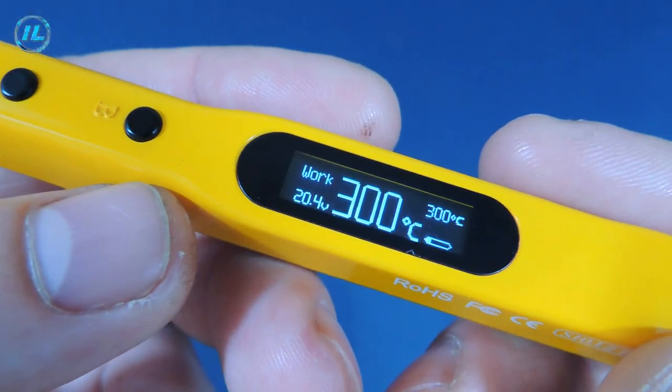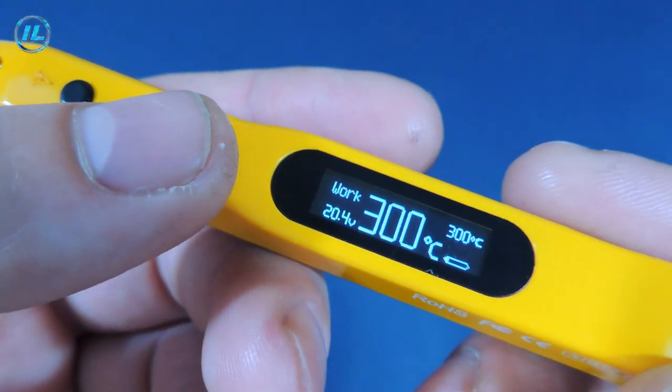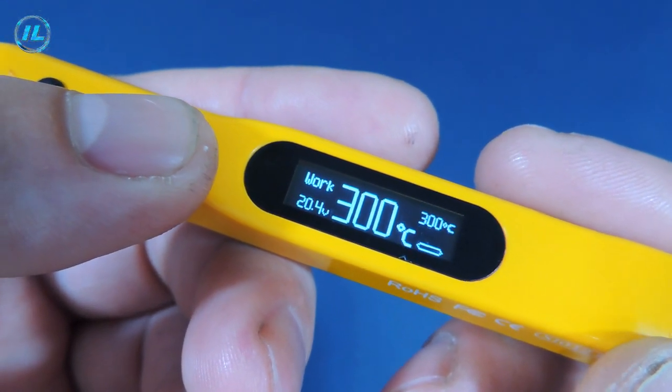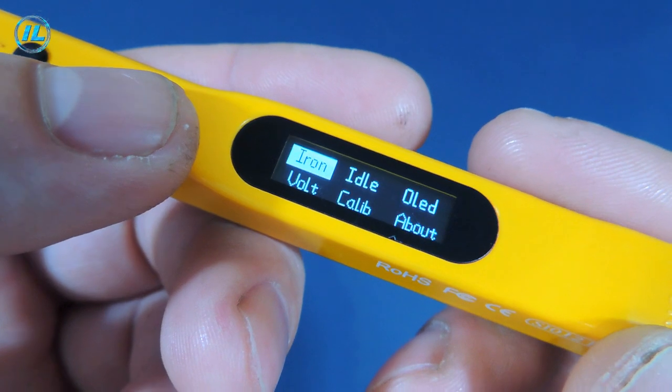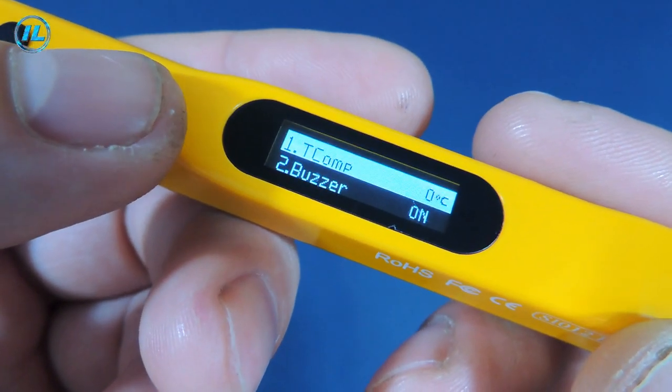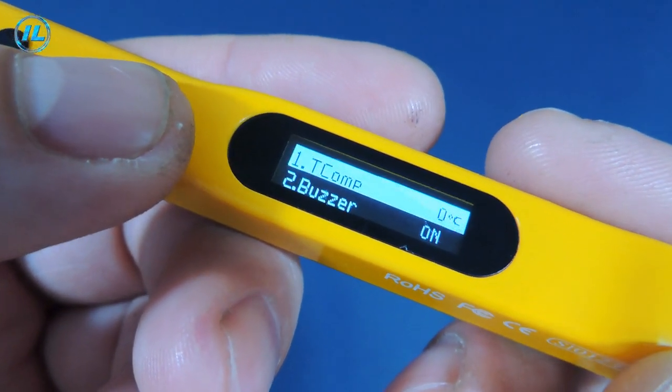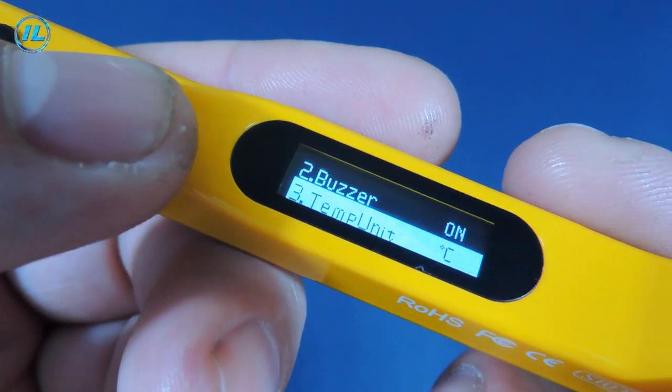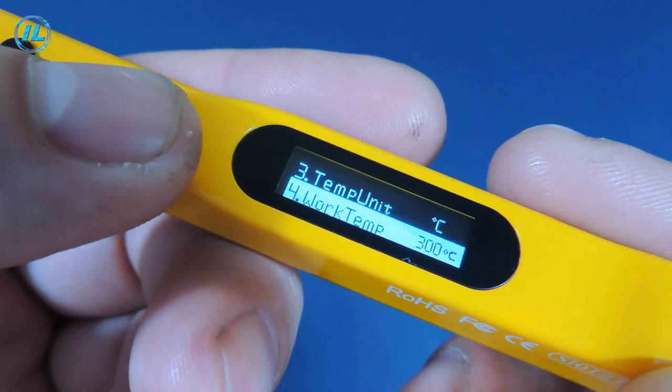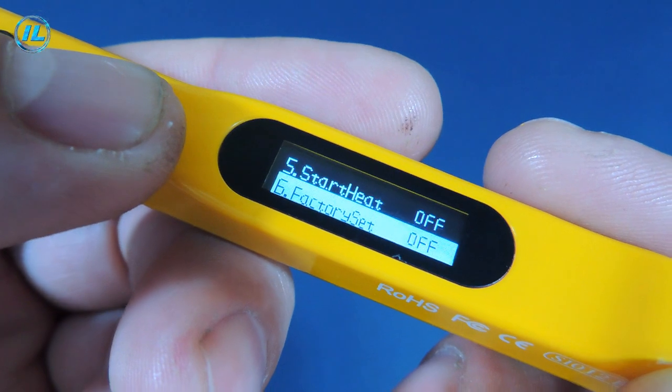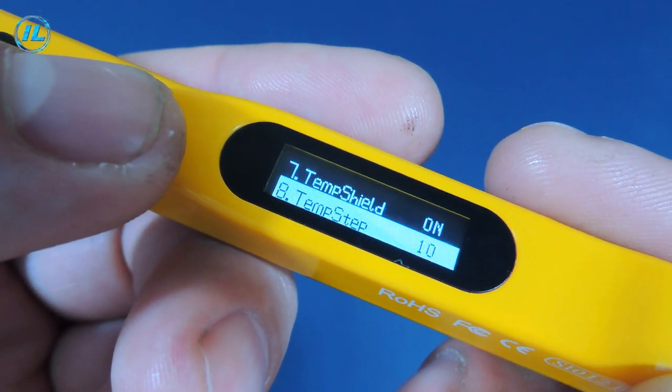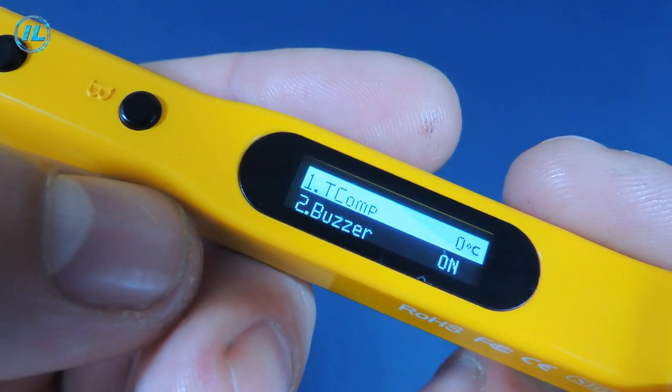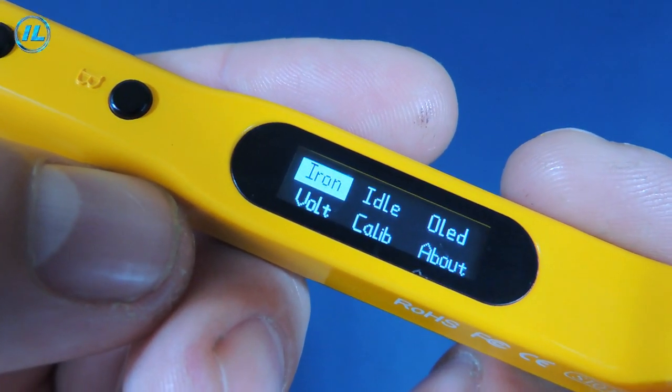This soldering iron has many settings. Let's look at some of them. In order to switch to the menu mode, you need to press and hold the B button. And here we see several menu items. There are several sub-items in the first paragraph: Temperature compensation, buzzer, that is, sound signal, temperature display in degrees Celsius or Fahrenheit, operating temperature, factory settings and also a temperature adjustment step of 10 degrees. After a couple of seconds of inactivity, the soldering iron takes a step back.